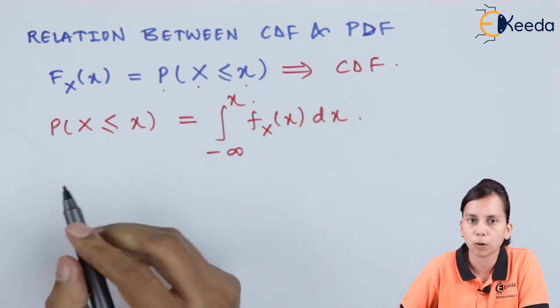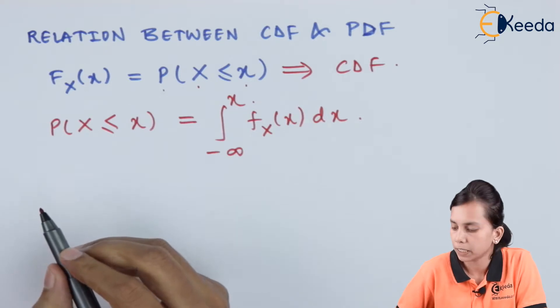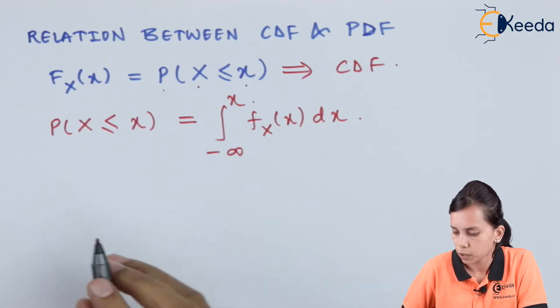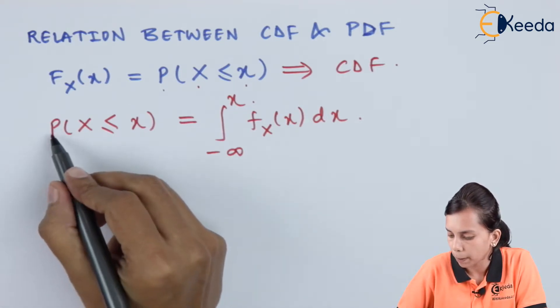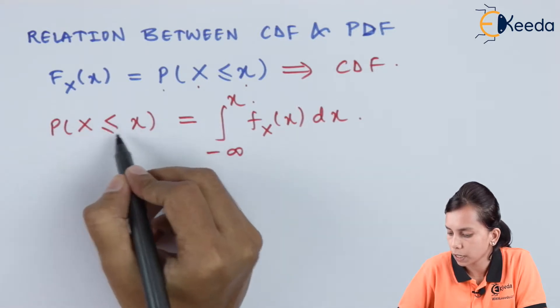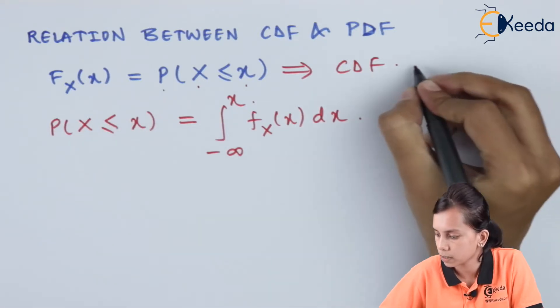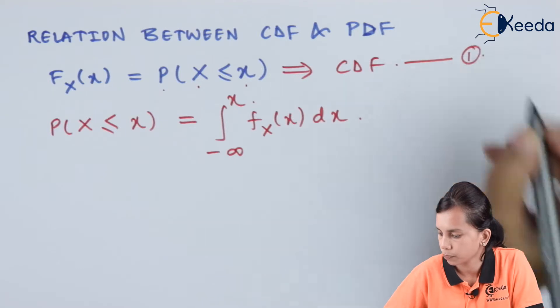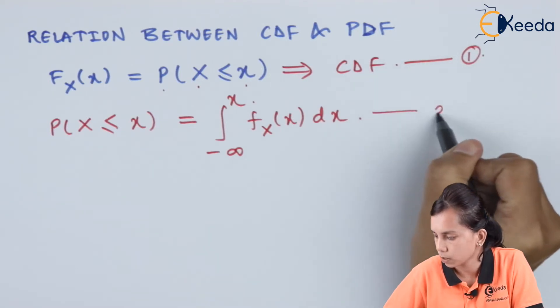This is one of the properties of probability density function. So, this P(X ≤ x), let us say this is our equation 1 and this is equation 2.